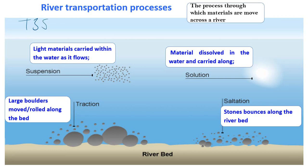For transportation — the T3S mnemonic. Traction is when large boulders are rolled along the river bed. Saltation is when stones bounce along the bed like leapfrog as water moves. Solution is when materials are dissolved in water and carried away. Suspension is when light materials are carried within the river — note the word 'within' is important here.